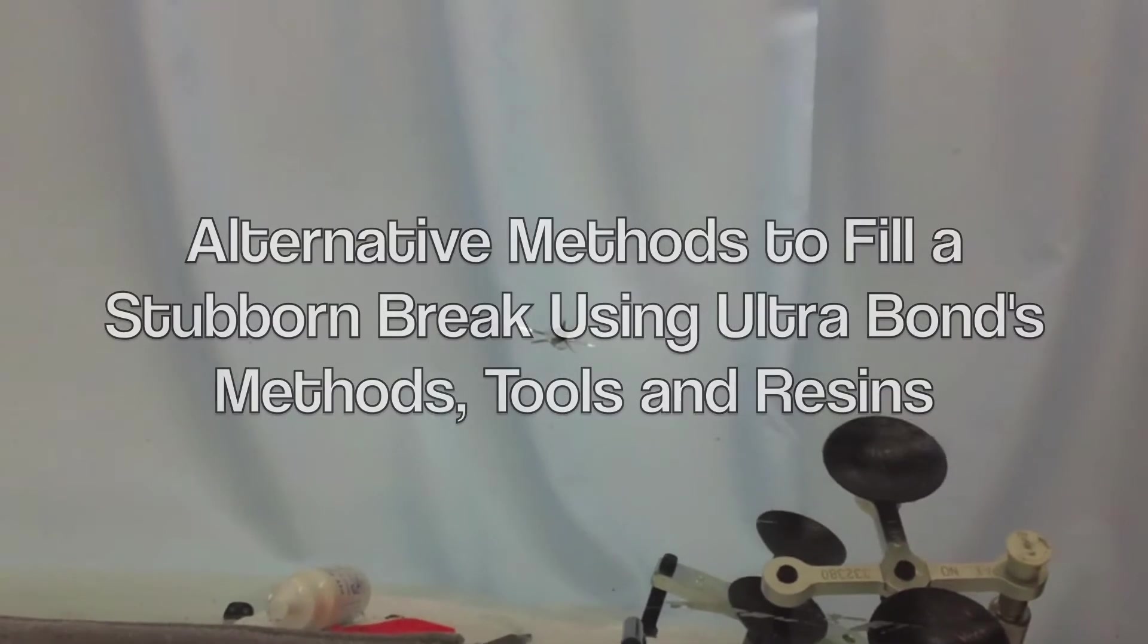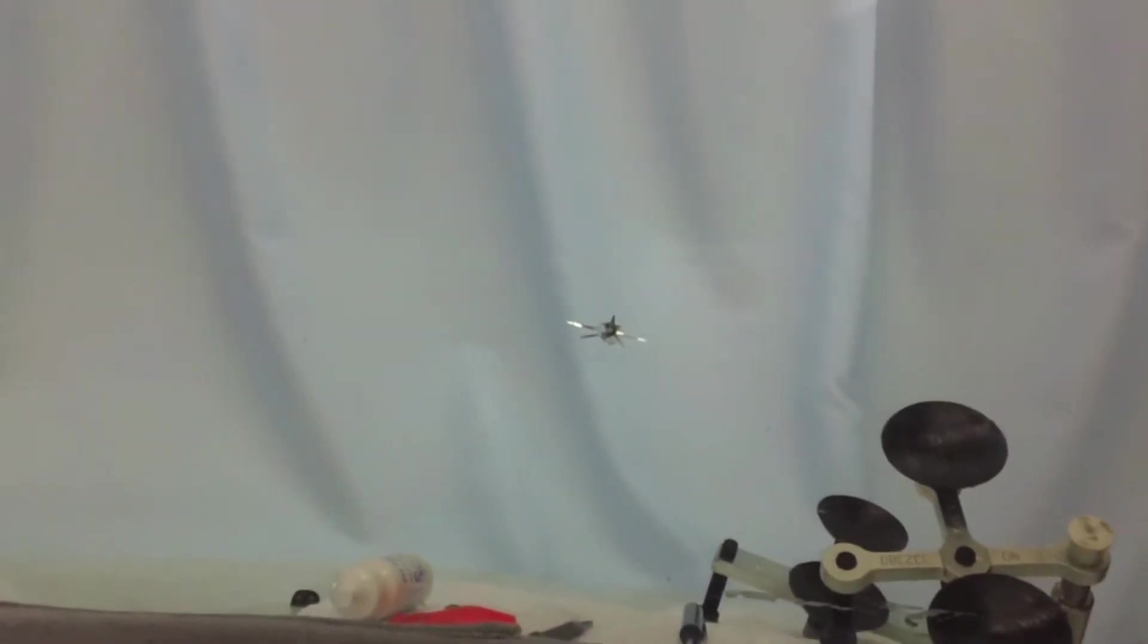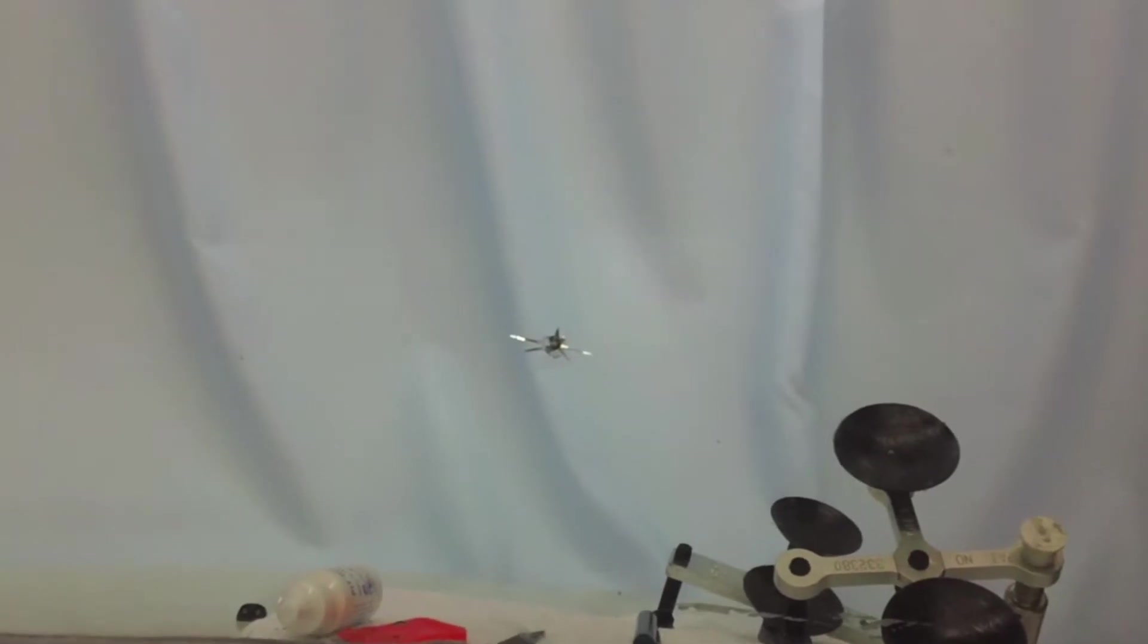This is a star break and we're going to repair it with the Ultrabond Classic Crackmaster tool. We're going to show you alternative methods to fill stone breaks. Sometimes when you're fixing a stone break and it doesn't fill, you have other methods that you use to fill it.